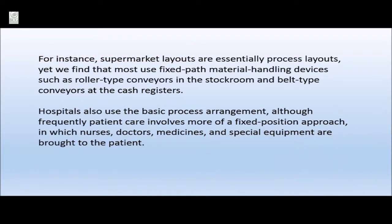For instance, supermarket layouts are essentially process layouts, yet most use fixed-path material handling devices such as roller-type conveyors in the stock room and belt-type conveyors at the cash registers. Hospitals also use a basic process arrangement, although frequently patient care involves more of a fixed position approach in which nurses, doctors, medicine, and special equipment are brought to the patient.